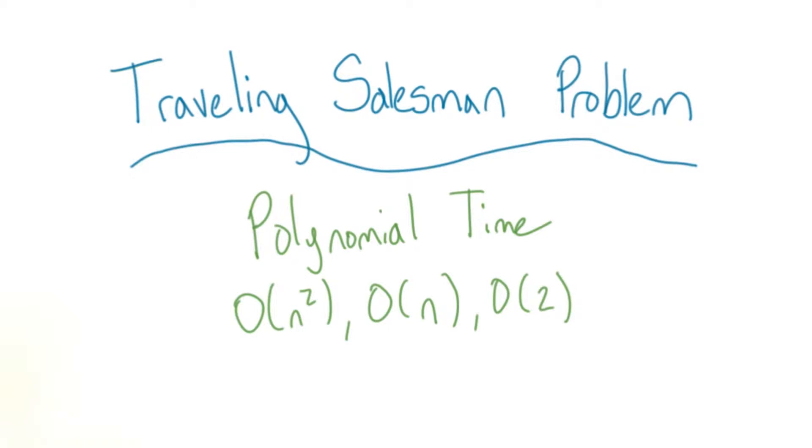As I mentioned during the discussion of the knapsack problem, polynomial time algorithms have a runtime where n has a constant exponent, like n squared.